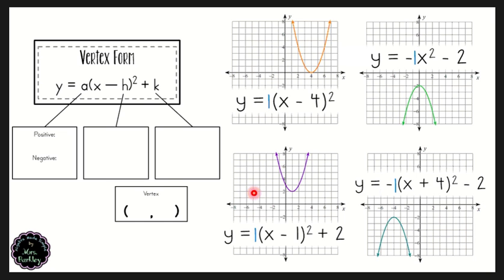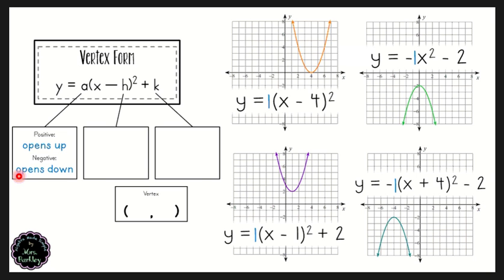We can see that the two graphs on the left both open up, whereas the graphs on the right open down. So we can say that our a value — though it does have stretching and shrinking components — for our purposes: if the a value is positive, the parabola opens up, and if the a value is negative, it opens down.